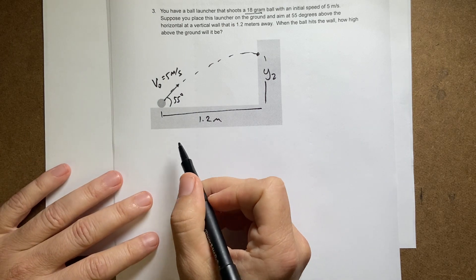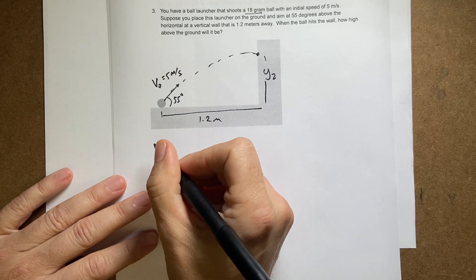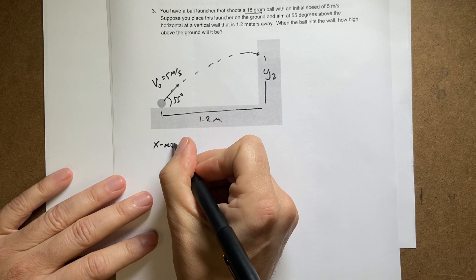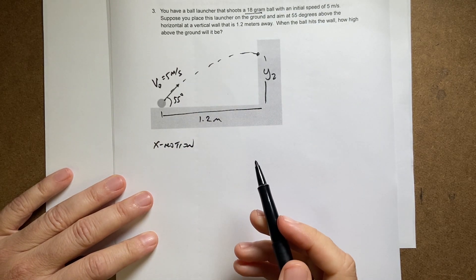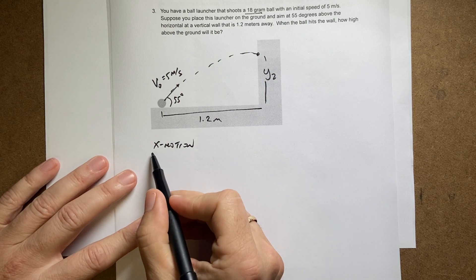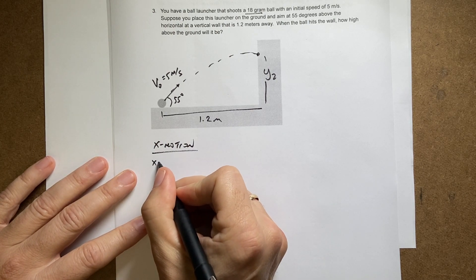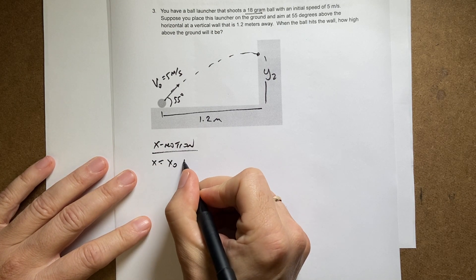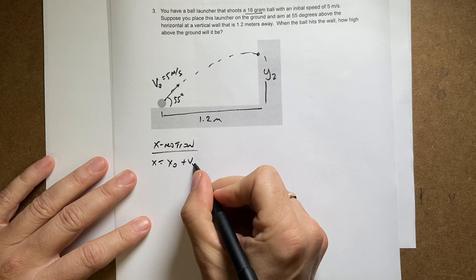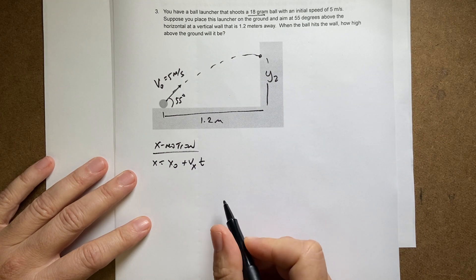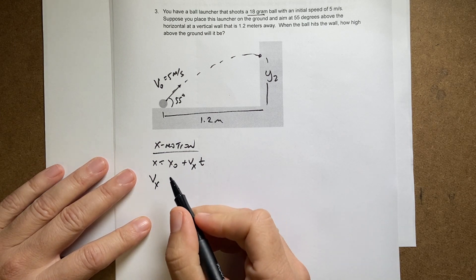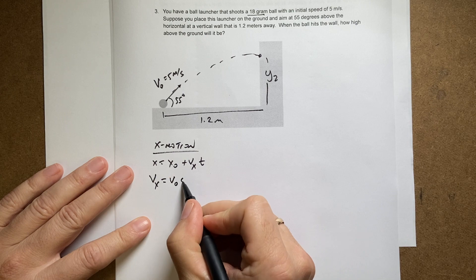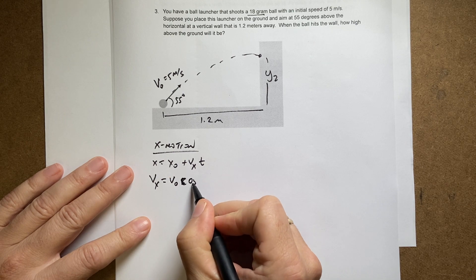Okay, so in terms of projectile motion we know the following. I have X motion. The key thing is that the X motion and the Y motion can be treated independently. So the X motion I'm gonna say X equals X naught plus VXT. And VX, the initial X, which is the final X, there's no acceleration, is going to be V0 cosine of theta.